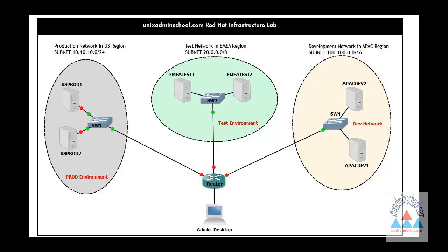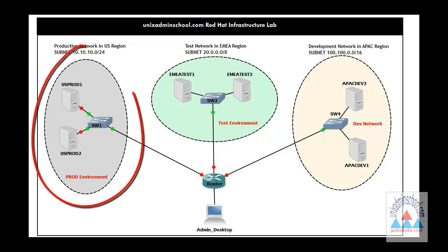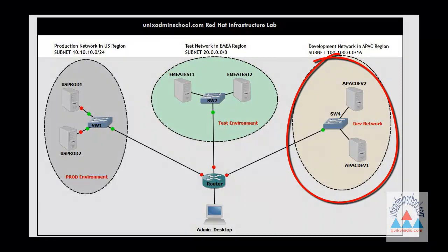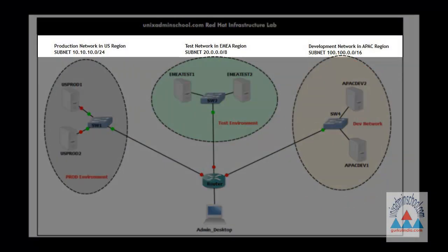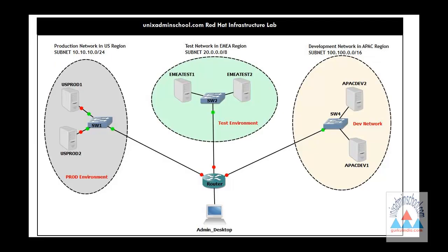From the snapshot of our training network, you can see that we have three different network environments: production network, test network, and development environment. Each of these environments is configured with different network segments so that you can fully explore the features of Red Hat Enterprise Linux 7 as an enterprise level operating system.